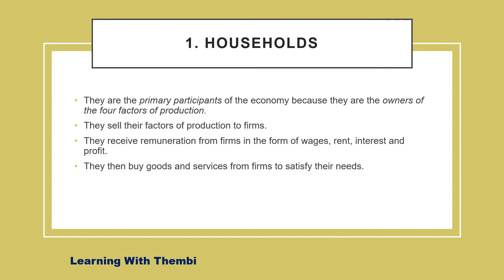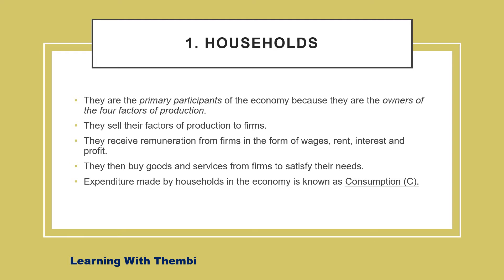With the remuneration they receive, households buy goods and services from firms to satisfy their needs, making them consumers in the economy. The expenditure made by households is known as consumption and is represented by the capital letter C in the accounting aggregate. It is households that decide what to buy, when, where, and how to buy products in order to satisfy their needs.